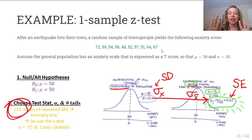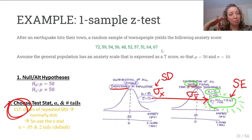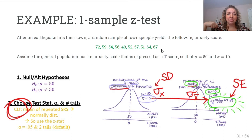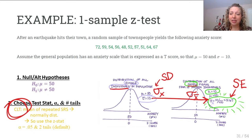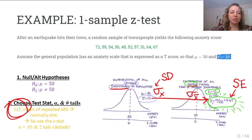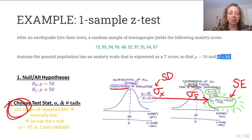Our sample size is 10. To get the spread of the sampling distribution — sigma with an x-bar, or the standard error — that's our original sigma of 10 divided by the square root of 10. Step one: null and alternative hypothesis. Step two: decide on your test statistic — we're doing a Z test. Alpha defaulting to 0.05, number of tails defaulting to 2.